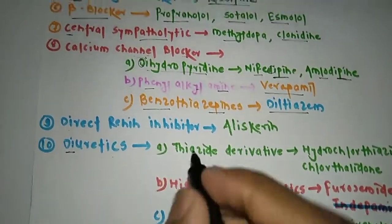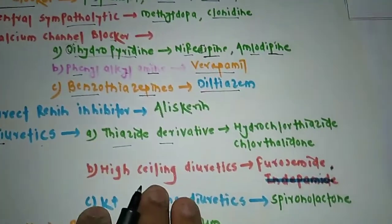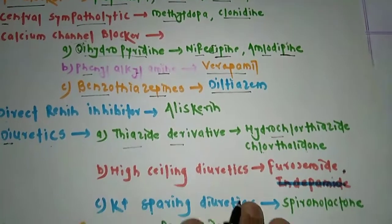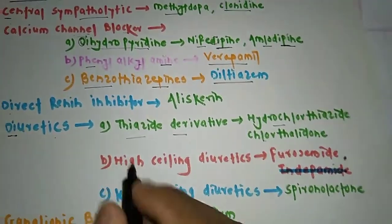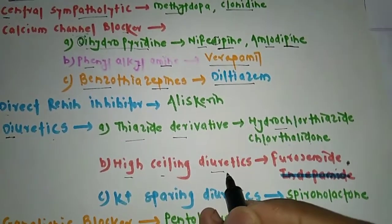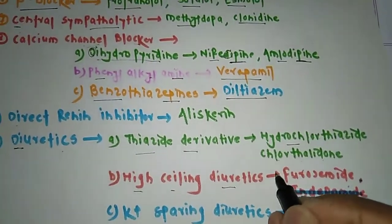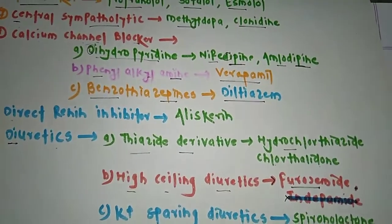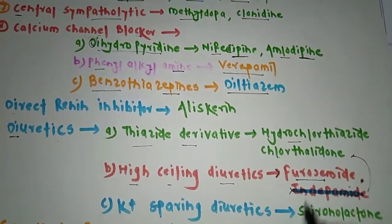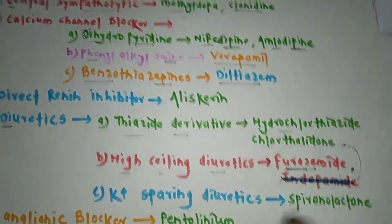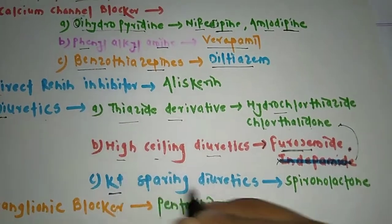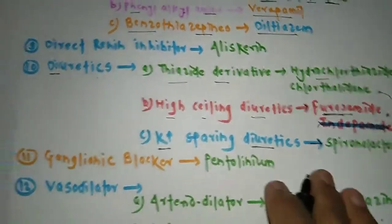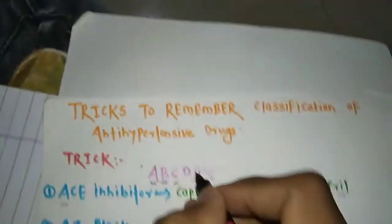The first diuretic subcategory is Thiazide diuretics. Examples include hydrochlorothiazide, chlorthalidone, and indapamide. The second is High ceiling diuretics — examples are furosemide and bumetanide. The third is Potassium-sparing diuretics — example is spironolactone. This completes the D category.